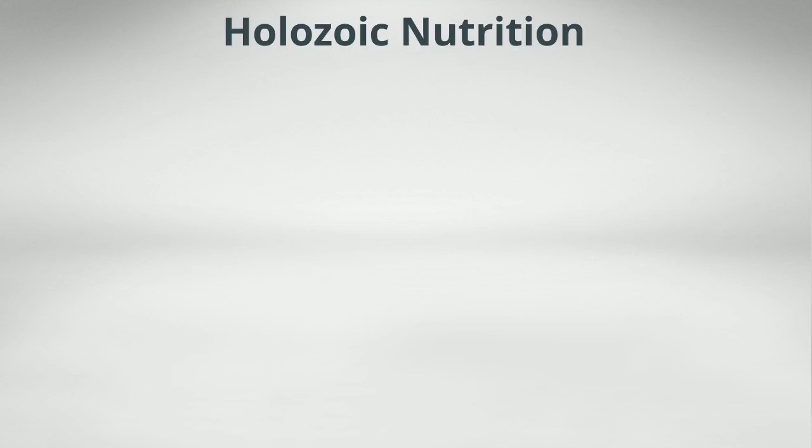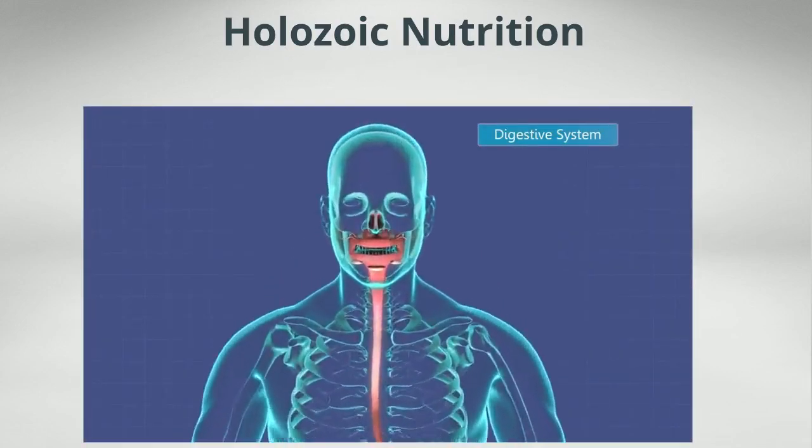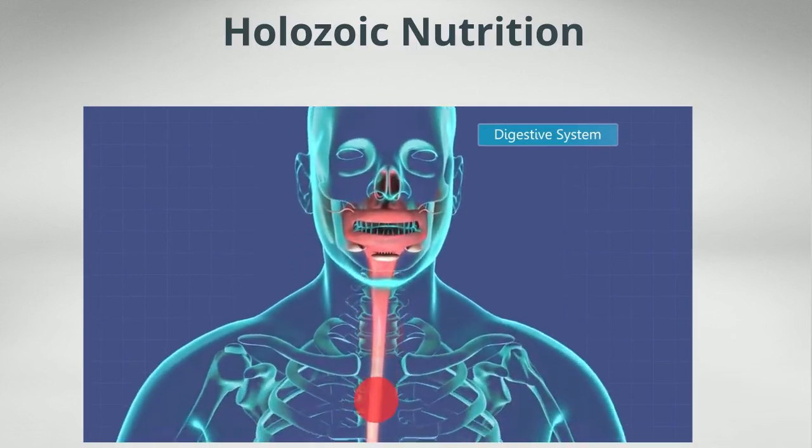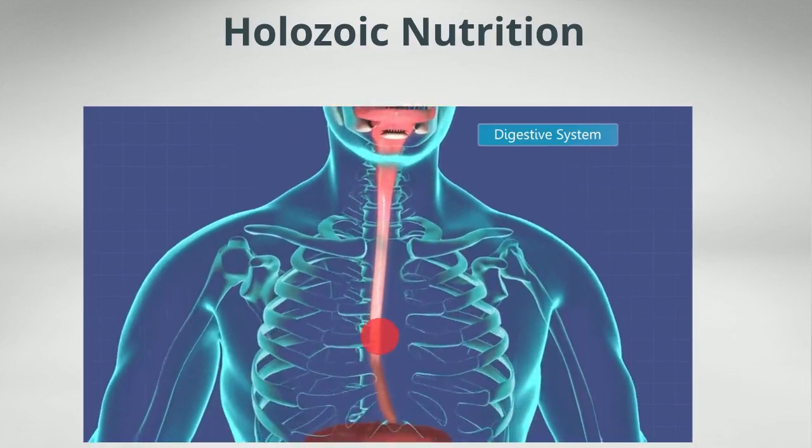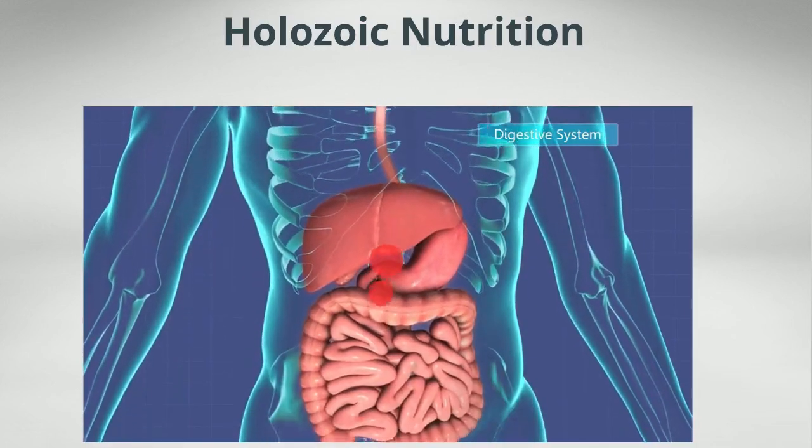Holozoic Nutrition. The term holozoic means feeding on solid food. Human beings and animals come under this category. In this type of nutrition, complex organic food materials are ingested through the mouth and are broken down into simpler soluble substances with the help of digestive enzymes.